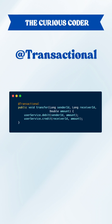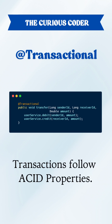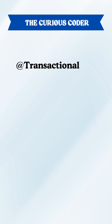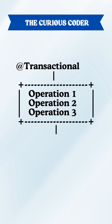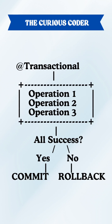Why? Because transactions follow ACID properties. That is, until everything succeeds, nothing is committed to the database. But if anything fails, it rolls back everything.